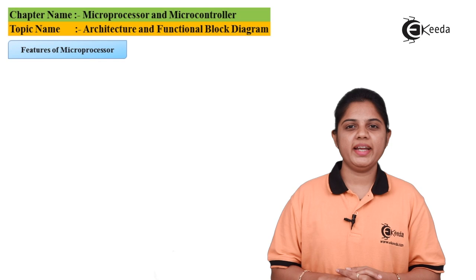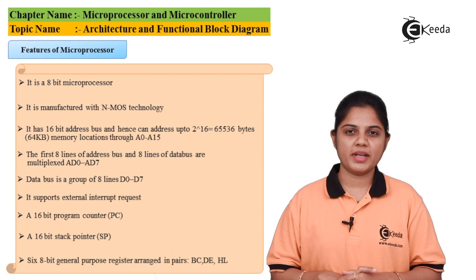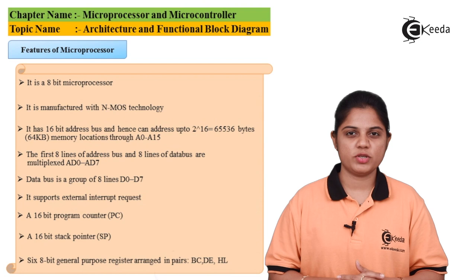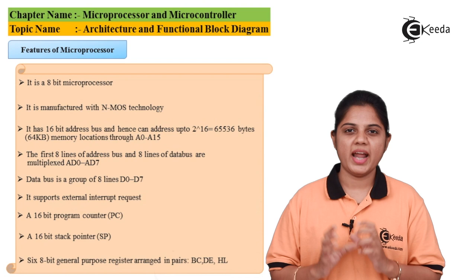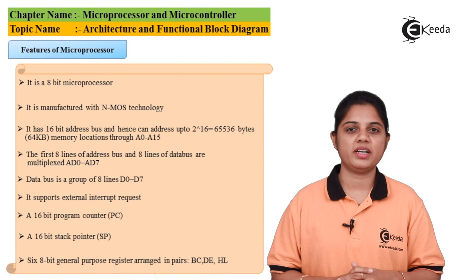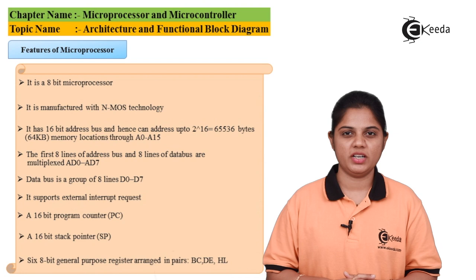The 8085 is called an 8-bit microprocessor. It is known as an 8-bit microprocessor because the number of bits processed in one instruction decides the type of processor. In one cycle it processes 8 bits of data, which also depends on the data bus available. The 8085 has an 8-bit data bus dedicated from AD0 to AD7.